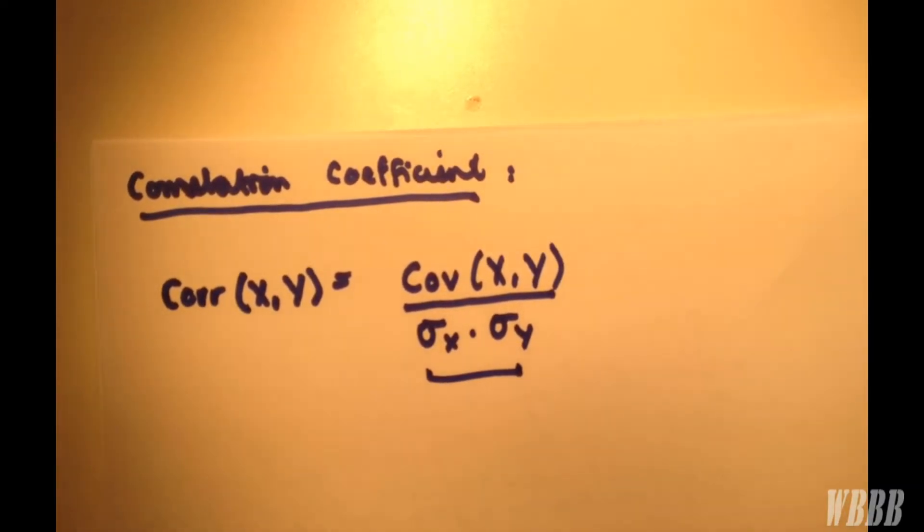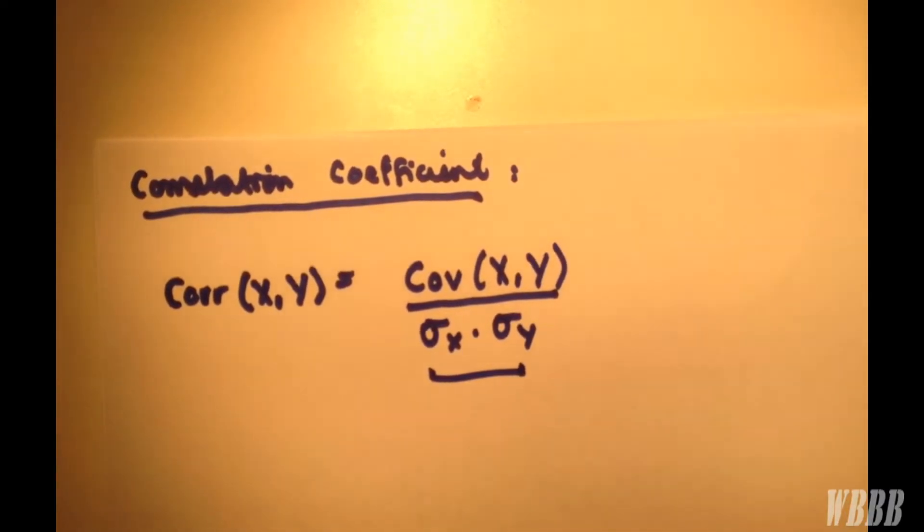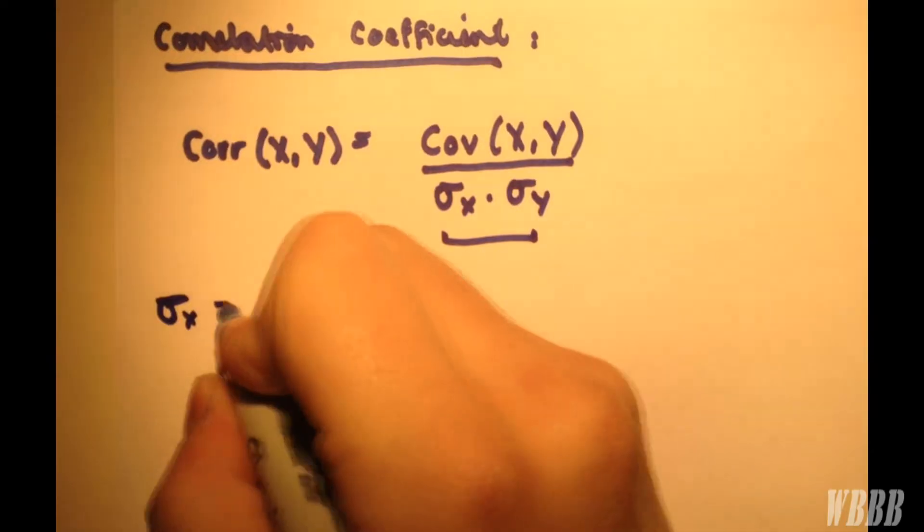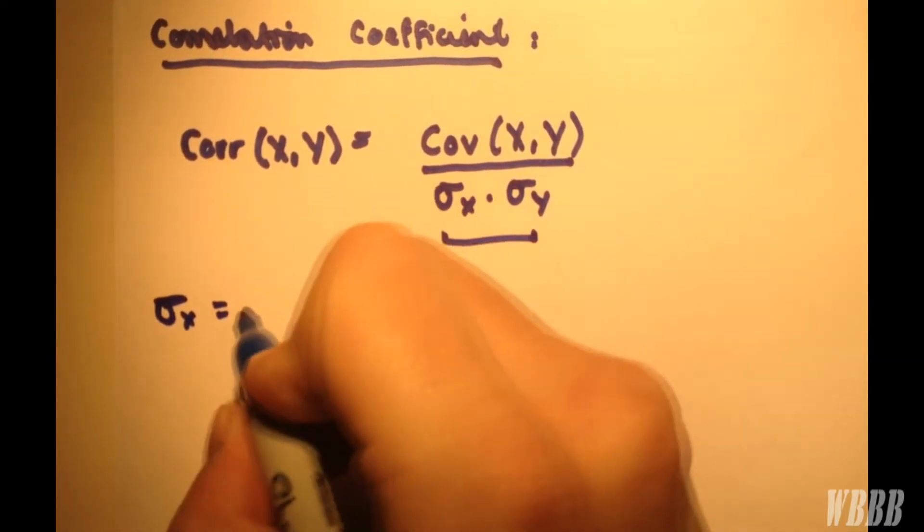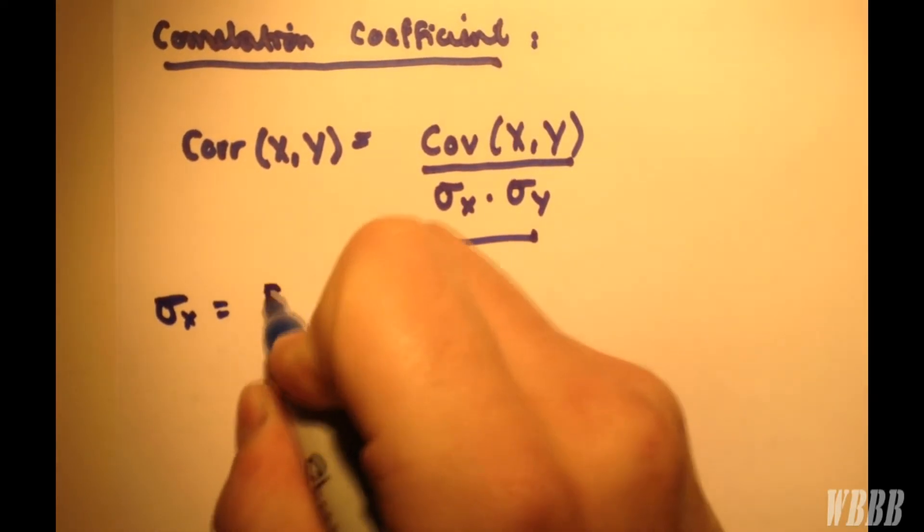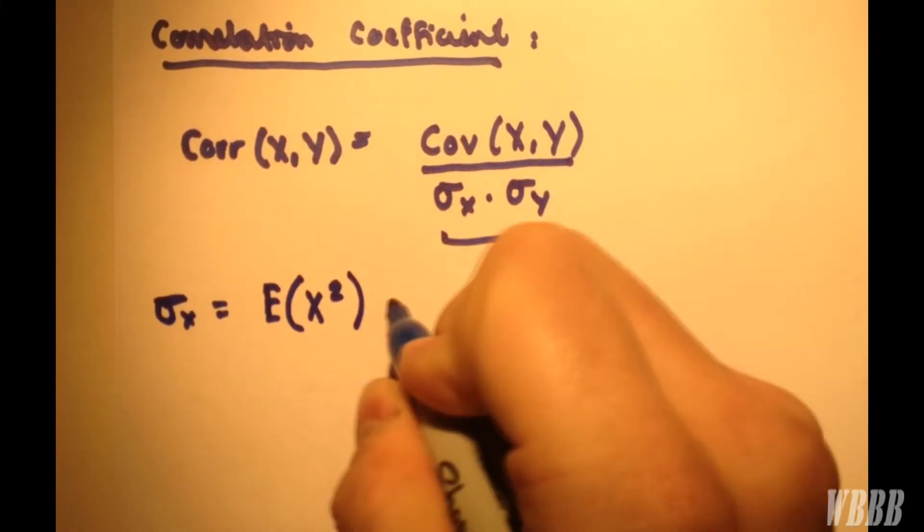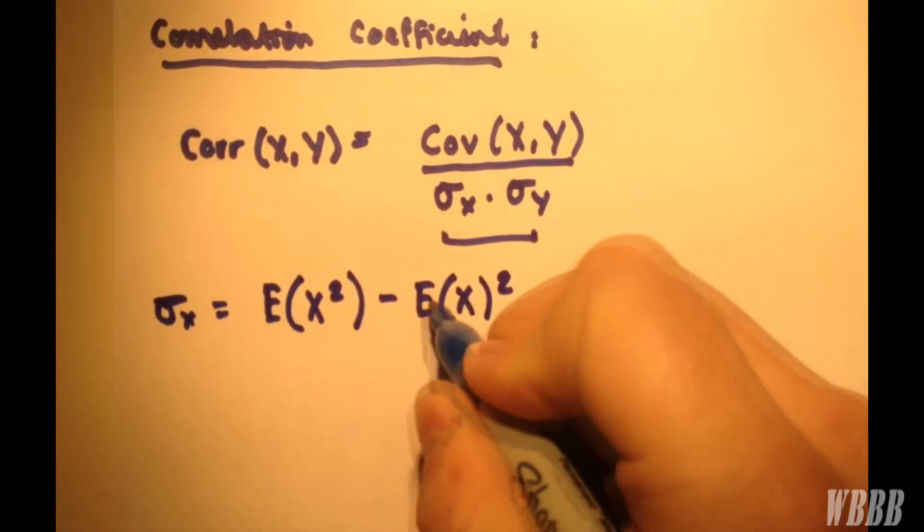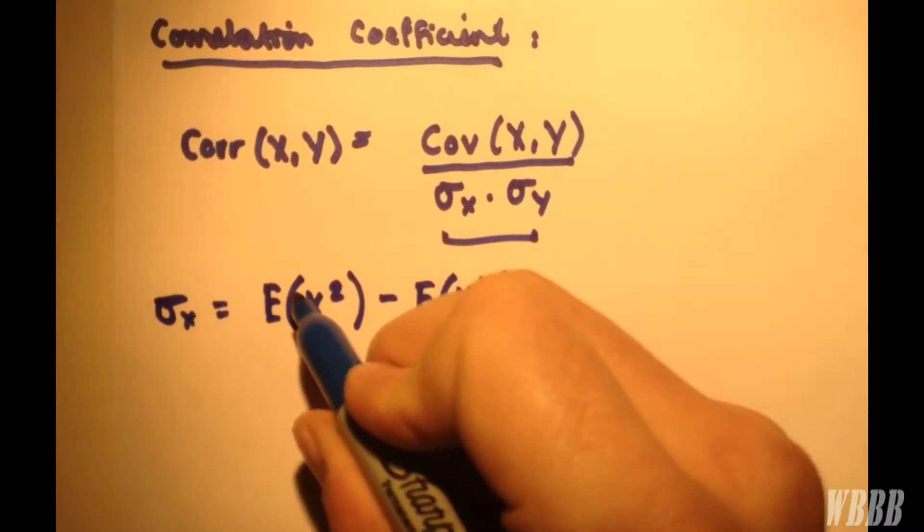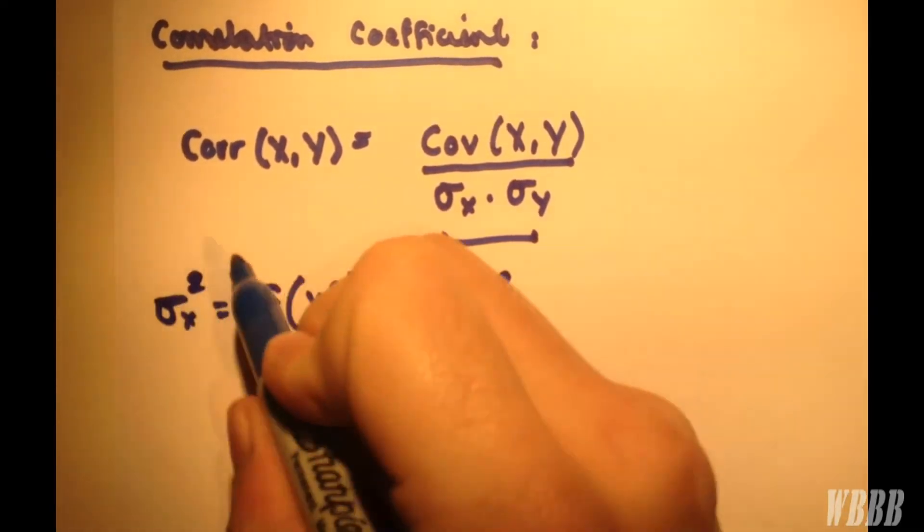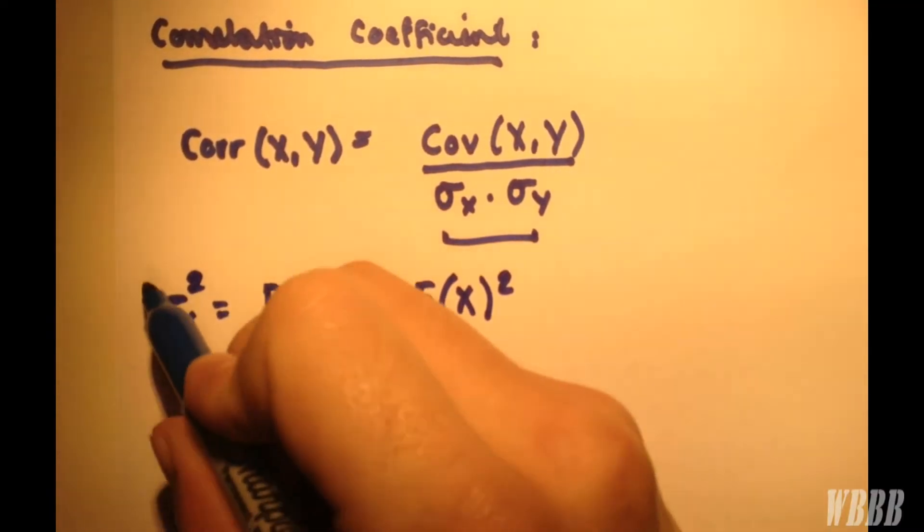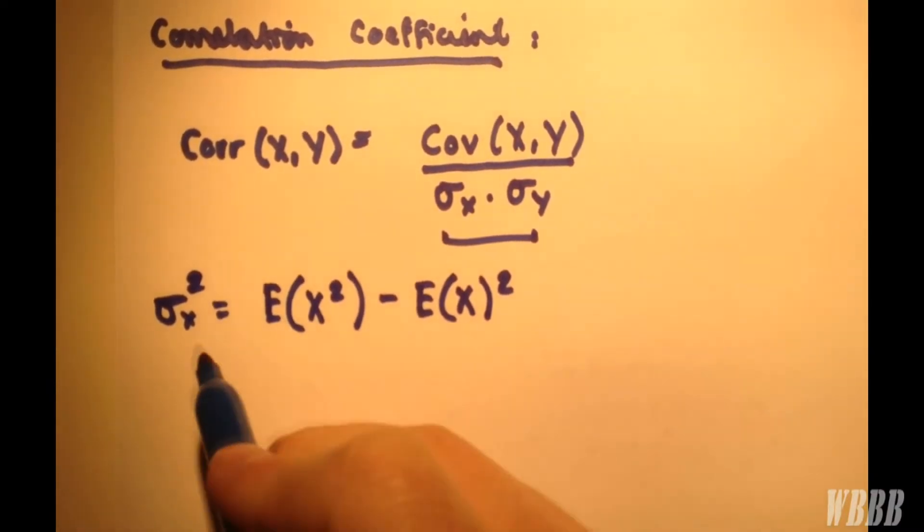So we're going to work out standard deviations for X and Y. It should be noted that the standard deviation of X, or Y, we calculate the expected value of X squared minus the expected value of X all squared. So we have this, and we can square it, but we don't have the expected value of X squared. I apologize, that should be the variance, of course. To find the standard deviation, we simply take the root of the variance. So we're going to work out the variances for X and for Y.